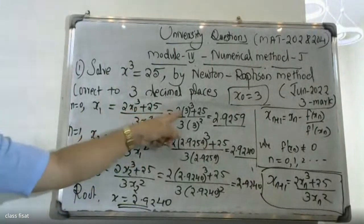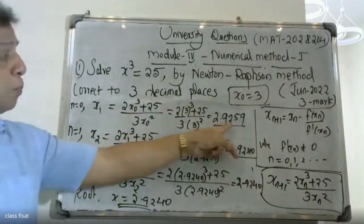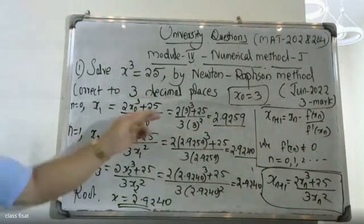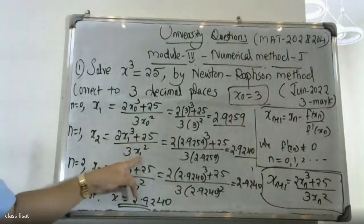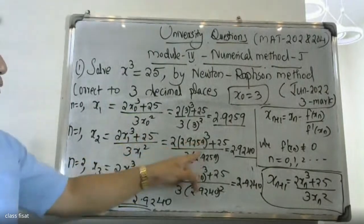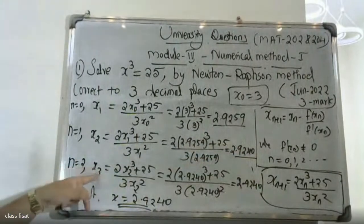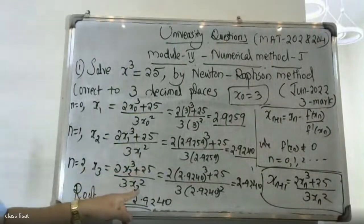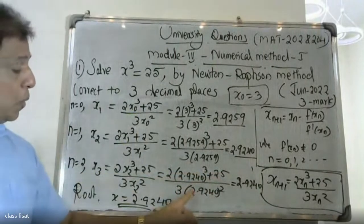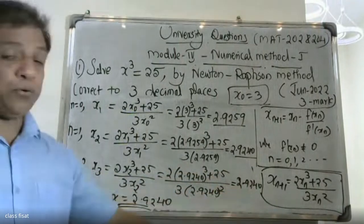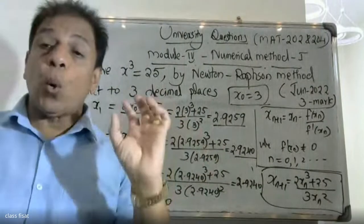With x₀ equal to 3: x₁ = (2 × 3³ plus 25) divided by (3 × 3²), giving x₁ equal to 2.9259. Then x₂ = (2 × x₁³ plus 25) divided by (3 × x₁²), giving x₂ equal to 2.9252. Then x₃ computed similarly gives 2.9252. Since x₂ and x₃ coincide, the answer is 2.9252.